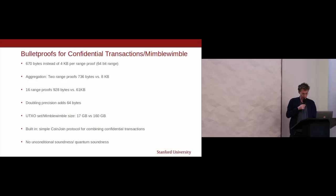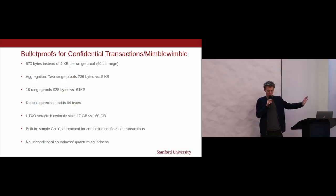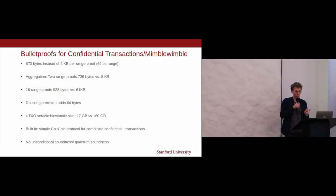To summarize Bulletproofs results for confidential transactions: 670 bytes instead of 4 kilobytes per range proof for a 64-bit range. Doubling the range adds 64 bytes; doubling the precision also adds 64 bytes. Without changing the transaction structure, applying this to the UTXO set reduces it from 160 gigabytes with old confidential transactions to only 17 gigabytes — much more practical. There's also a built-in simple CoinJoin protocol for combining confidential transactions.